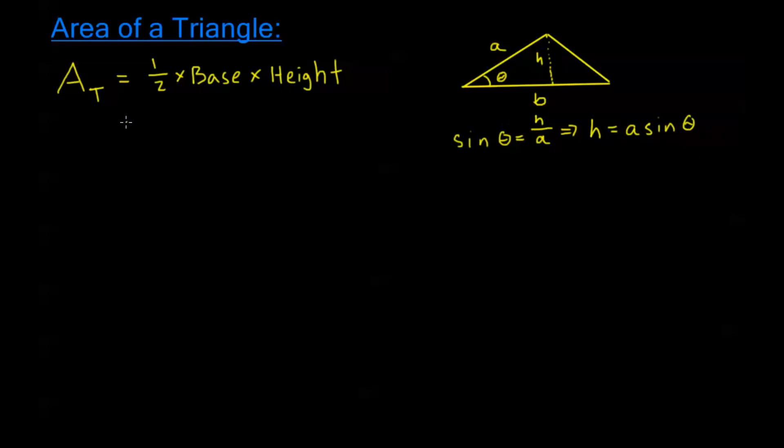So I can plug that into my formula here. The area of my triangle becomes one half. My base here, I've denoted on my triangle as a little b. And my height we found we can write as a sine theta.